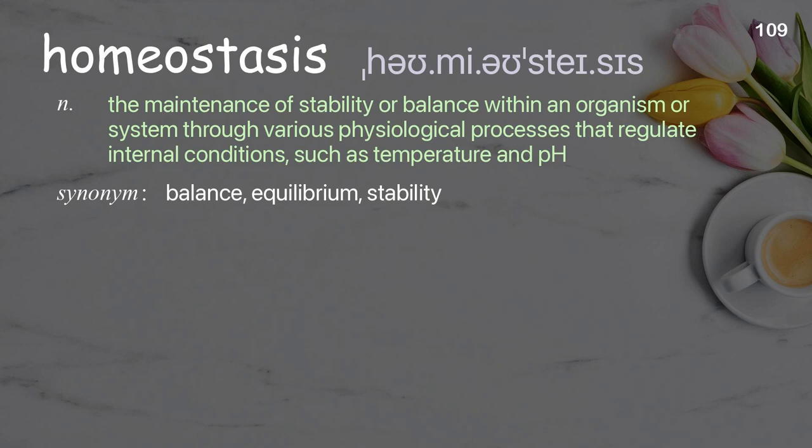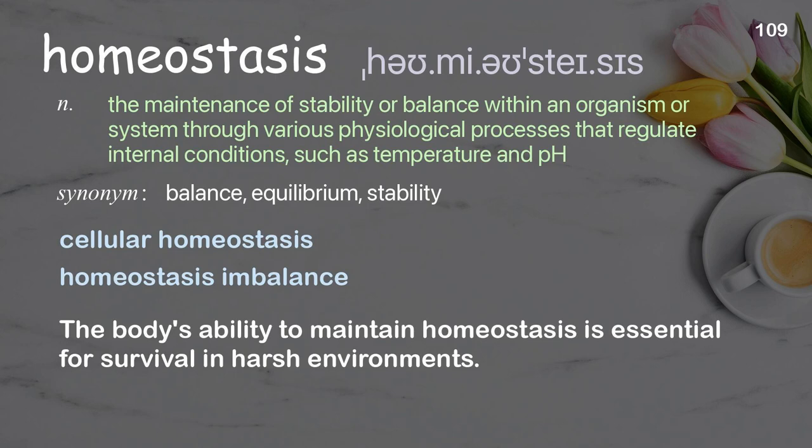Homeostasis: the maintenance of stability or balance within an organism or system through various physiological processes that regulate internal conditions such as temperature and pH. Examples: cellular homeostasis, homeostasis imbalance. The body's ability to maintain homeostasis is essential for survival in harsh environments.